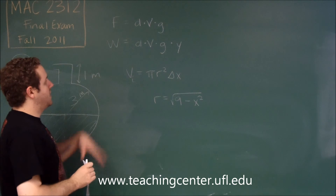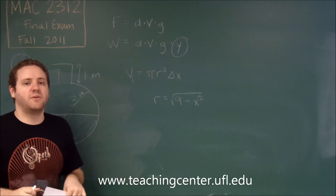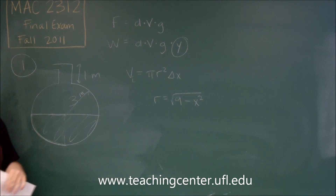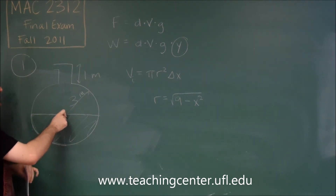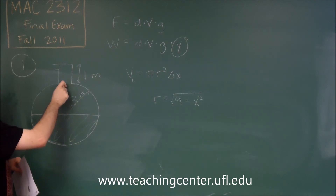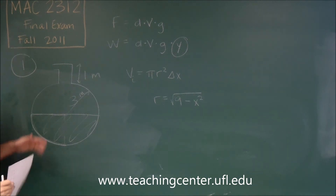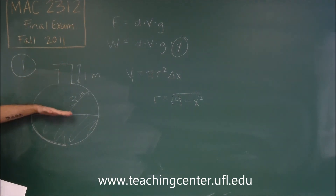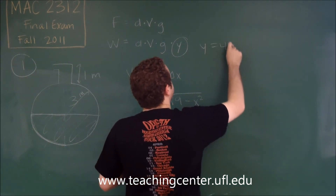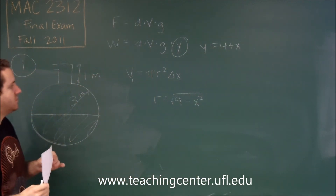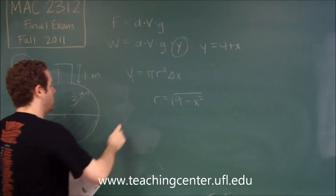The last thing to figure out is the distance each slice of liquid is being pumped. The first slice at X = 0 gets pumped up three meters to the top of the sphere and then one more meter out through the spout, so it's four. As we go further down, the distance is four plus our depth X, giving us a pumping distance of (4 + x).